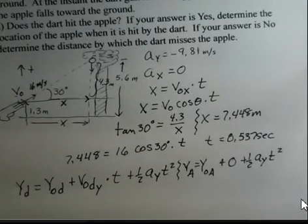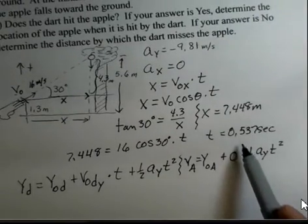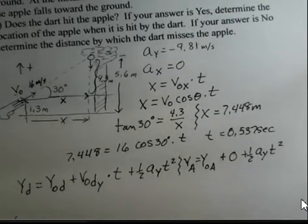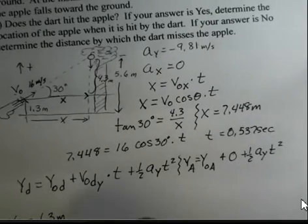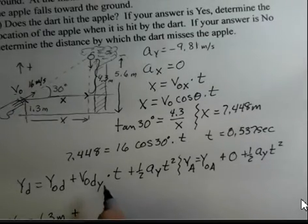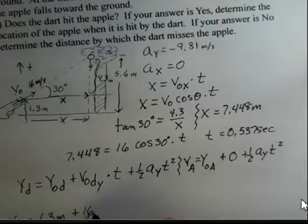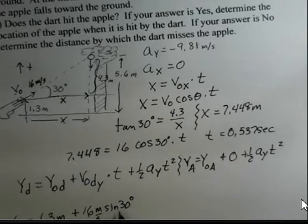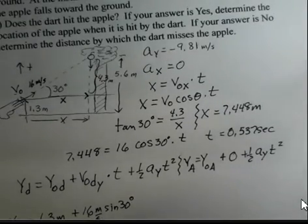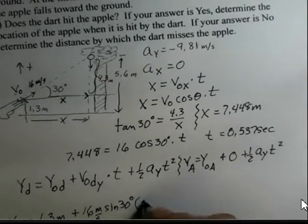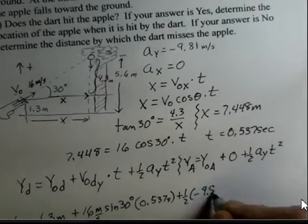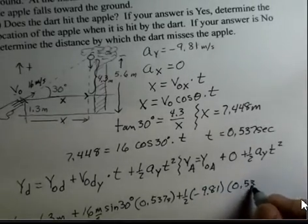Let's find out where is the dart and where is the apple for a time of 0.537 seconds. So first for the dart. Well, the initial position of the dart is 1.3 meters in the Y direction. We have an initial velocity in the Y direction for the dart of 16 meters per second times the sine of 30 degrees. Sine of 30 degrees is 0.5 times 16, so the initial Y velocity of the dart is going to be 8 meters per second. Let's continue here. Put in the time of 0.537 seconds, and then plus one half minus 9.81 and 0.537 seconds squared.